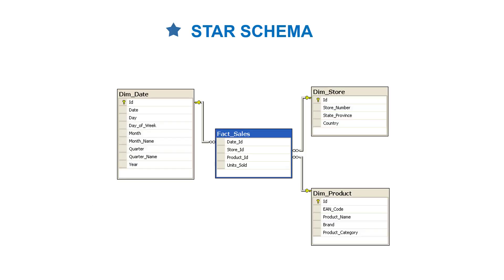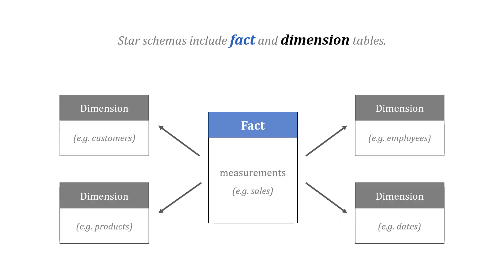The idea of dimensional modeling is built around things called star schemas. In this schema, you've got something in the middle and then tables on the edge — that's kind of why it's called the star schema. At the heart of this design is a fact table, which contains measurements, like sales for example — something you're measuring. And then you have dimensions that describe or provide additional context about those facts.